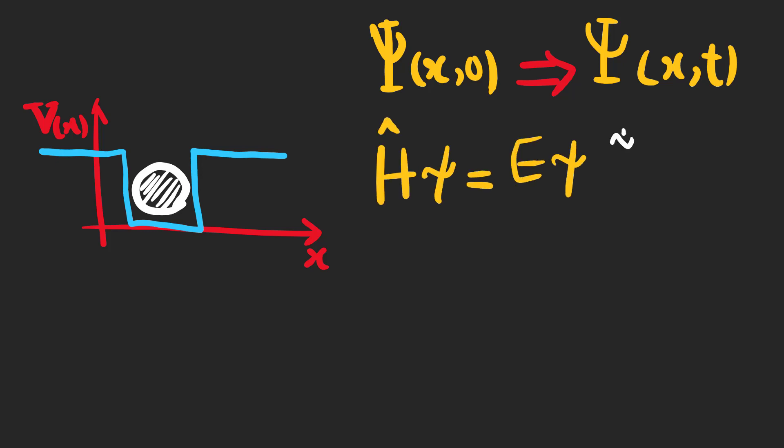What we need to do is solve the time-independent Schrodinger equation which yields an infinite set of solutions psi_1, psi_2, psi_3 and so on for the wave function, and also their associated energies E_1, E_2, E_3 and so on.